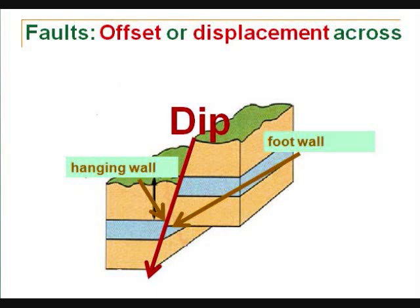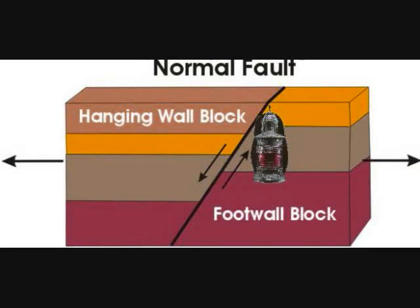Hanging wall and foot wall are names that come from early miners looking for gold long ago. Since minerals including gold are found in faults, the miners dug down to the fault and moved across it extracting the gold. The side where they hung the light or lantern was called the hanging wall, and the side where they stood was called the foot wall, where you put your feet. These expressions are now standard geological terms.